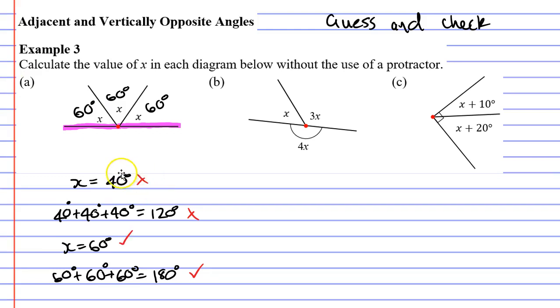Now when you do questions like these, it probably would help to rub out or cross out your previous solution. You don't want someone to mark it and go, oh they think x is 40, which is wrong. So our solution is 60 degrees. Now let's move on to question B,